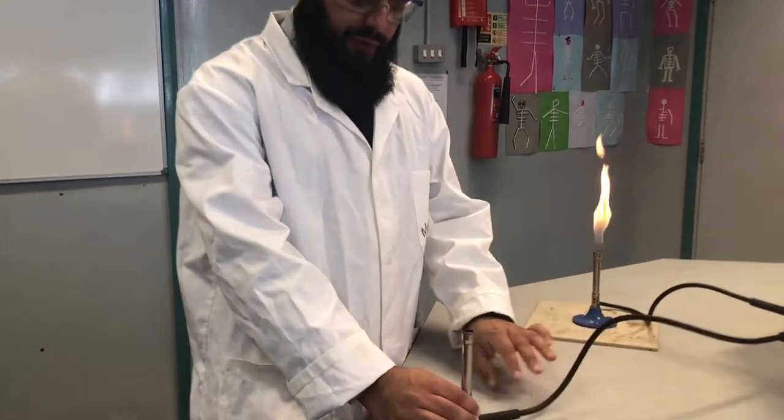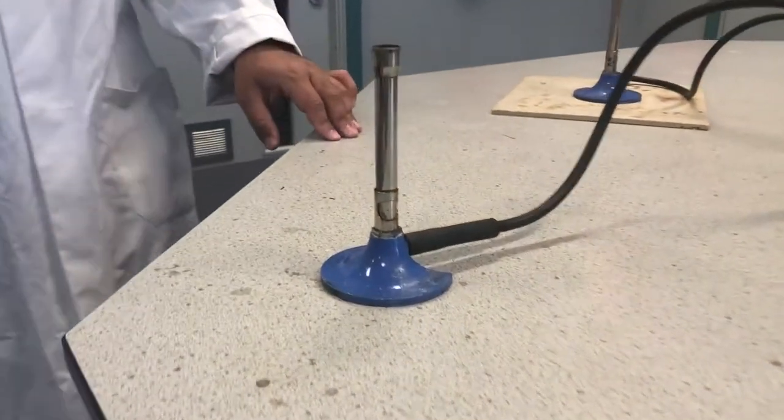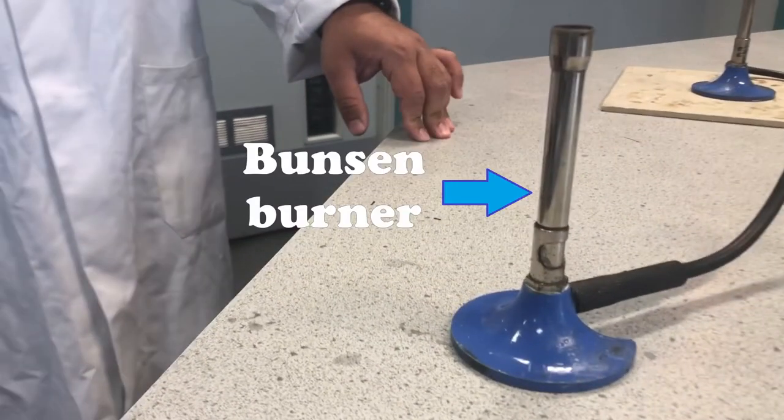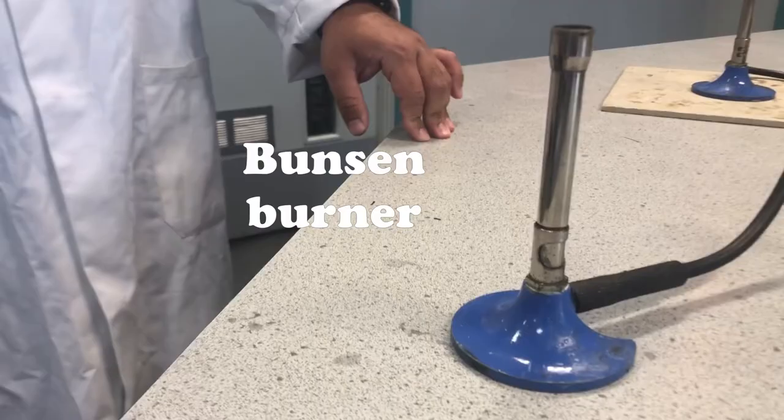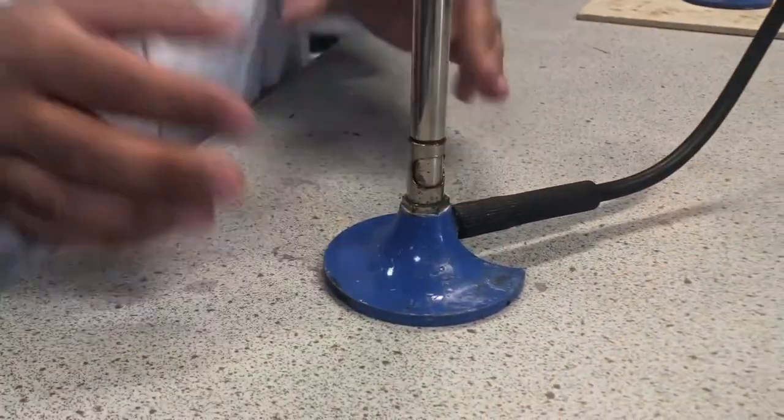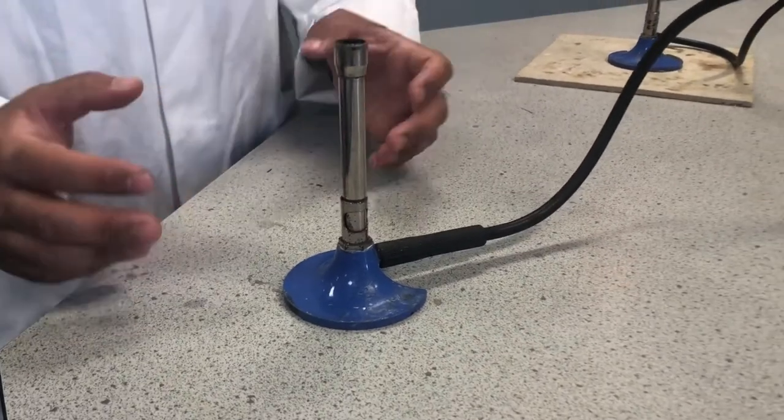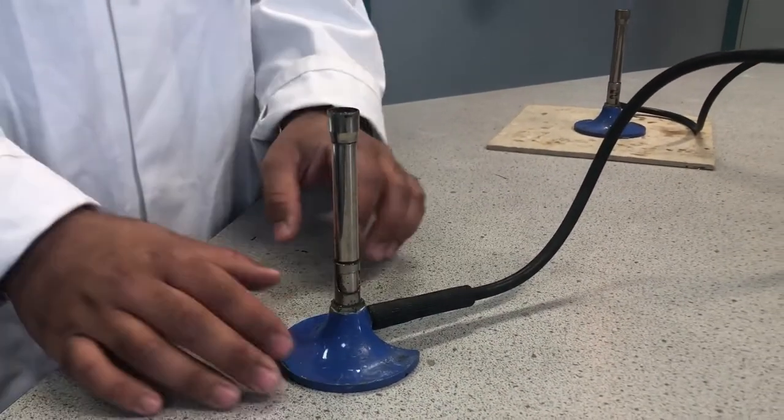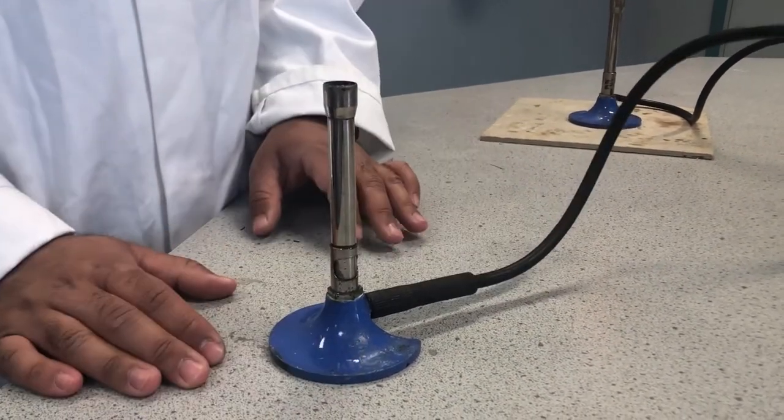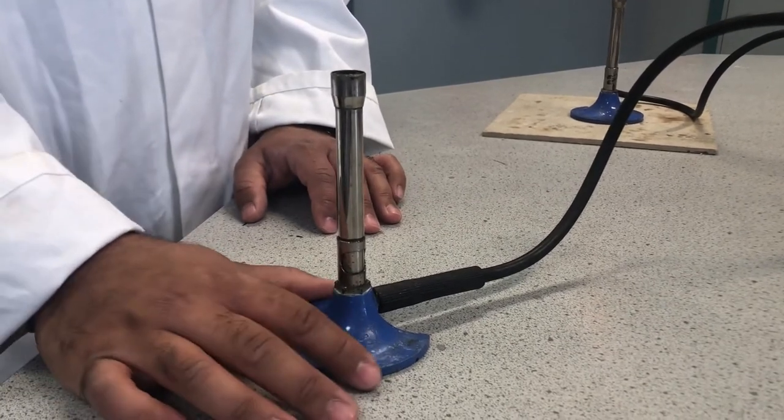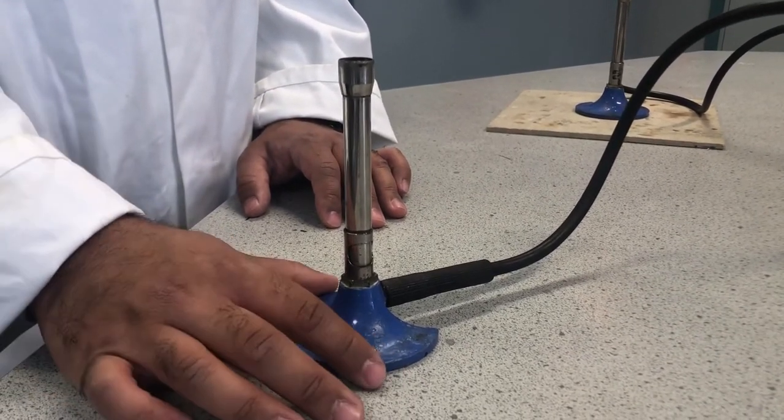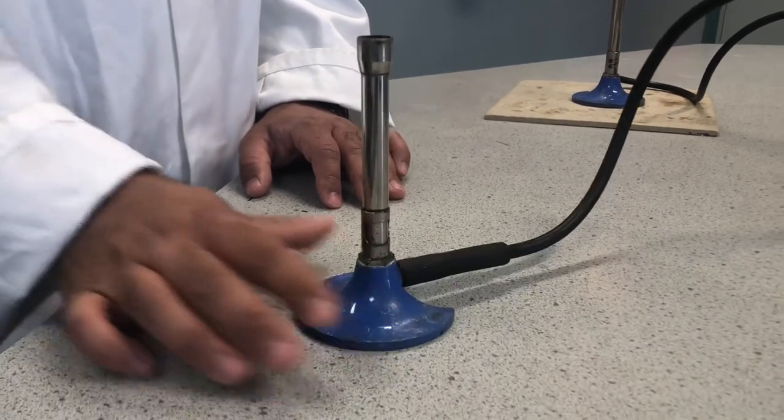So first of all, if we focus on this apparatus here, the Bunsen burner. The Bunsen burner is designed to give us heat in the lab so we can monitor chemical reactions, speed them up. It has certain structure to it that you need to be familiar with. This base is designed to be heat proof. So if you ever need to use the Bunsen burner or move it, you hold it from the base.